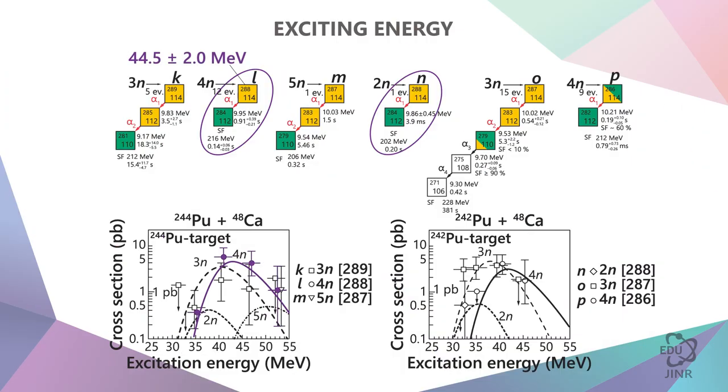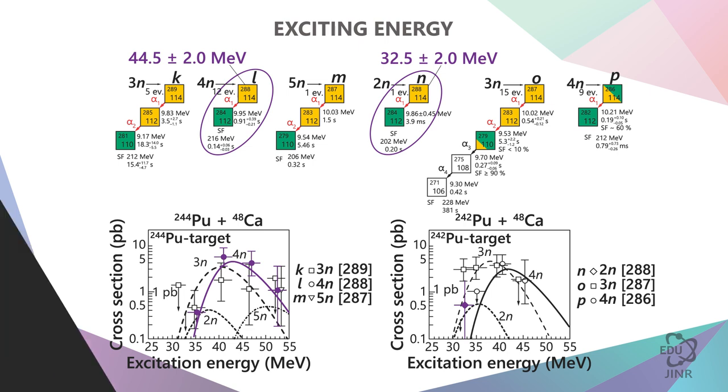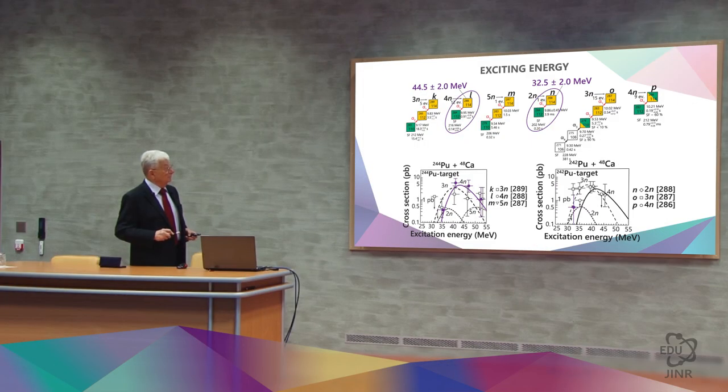This is how the 4N reaction behaves. Its maximum is at an energy level of 44.5 plus minus 2 mega electron volt. This is where the 2N is located on the second graph. Its energy is 32.5 mega electron volt.